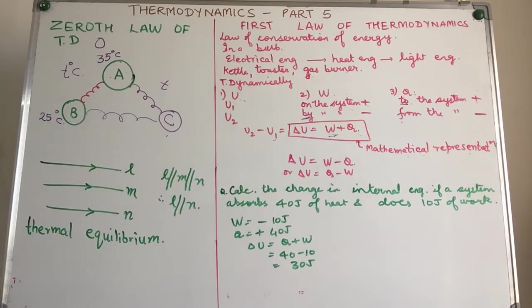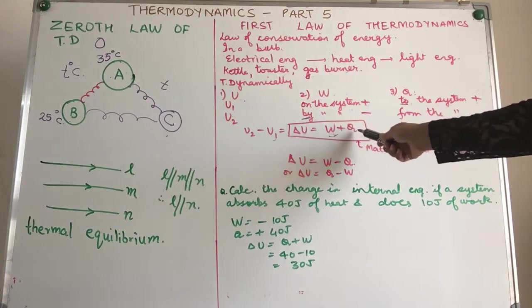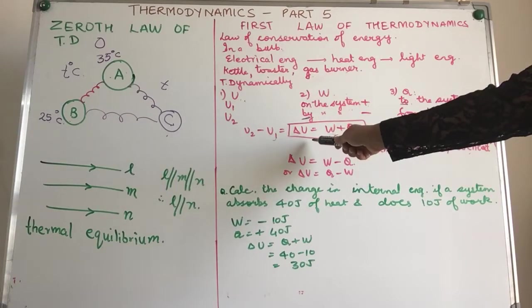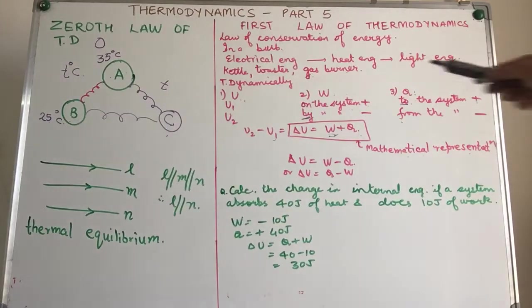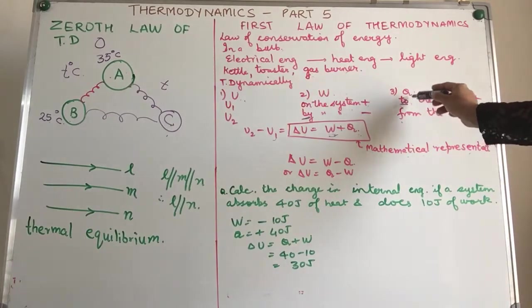Again, from examination point of view, if you are asked to represent the first law of thermodynamics mathematically, you say delta U is equals to W plus Q, where delta U is change in internal energy, W is the work done on the system, Q is the heat added to the system. How does this representation change? Why am I stressing on this?